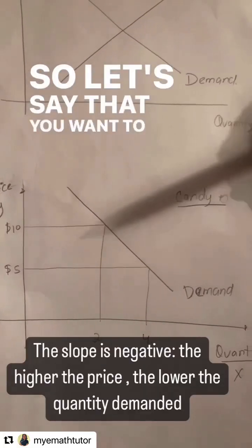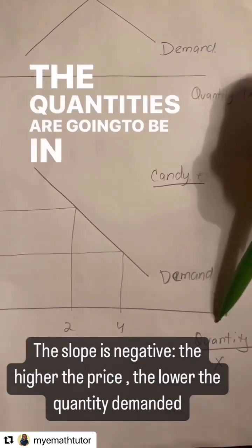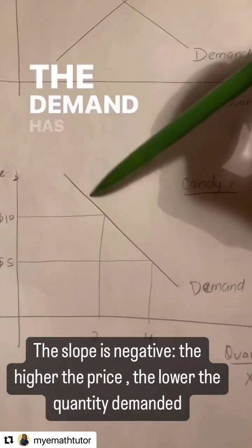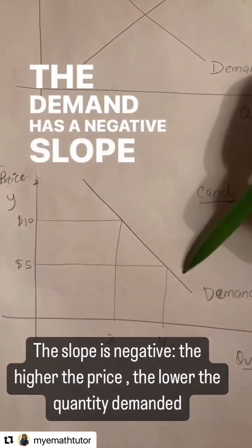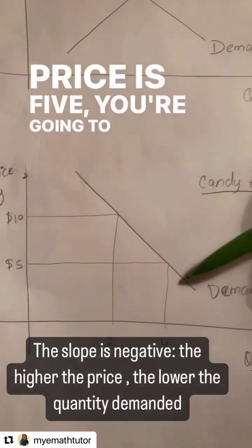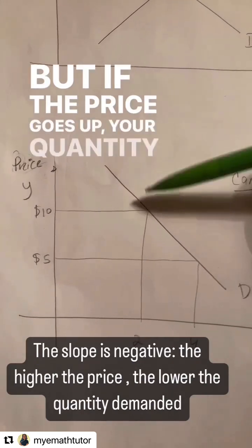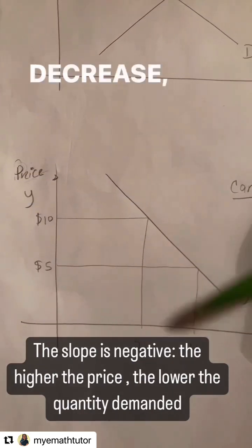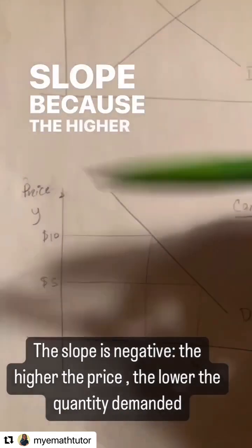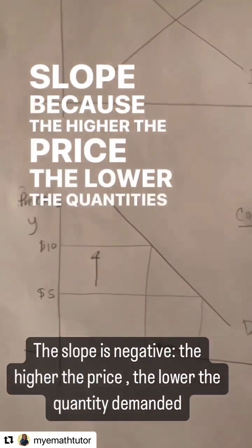Let's say that you want to do the graph of the demand for candy. The quantities are going to be in the x-axis and the price is going to be in the y. The demand has a negative slope because let's say that the price is 5 — you're going to demand 4 units of candy. But if the price goes up, your quantity is basically going to decrease. That's the reason why the demand has a negative slope: the higher the price, the lower the quantities demanded.